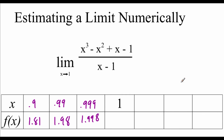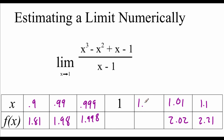Now approaching 1 from the right: at 1.1 we get 2.21, at 1.01 we get 2.02, and at 1.001 we get 2.002. As we approach from the left and from the right, the function value is approaching 2. So even though we couldn't plug 1 in, we can still determine that the limit as x approaches 1 is 2.